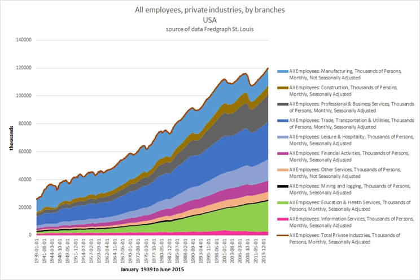In some types of employment, employees may receive benefits in addition to payment. Benefits can include health insurance, housing, disability insurance or use of a gym. Employment is typically governed by employment laws, regulations or legal contracts.